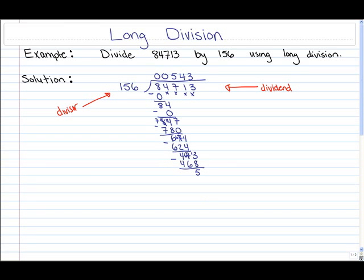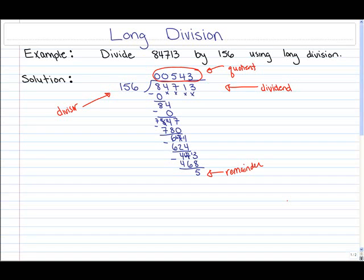So here depending on your instructor they may be happy with the quotient answer of 543 with a remainder of 5, or your instructor may want you to obtain a more accurate quotient which just means to obtain some decimal places.